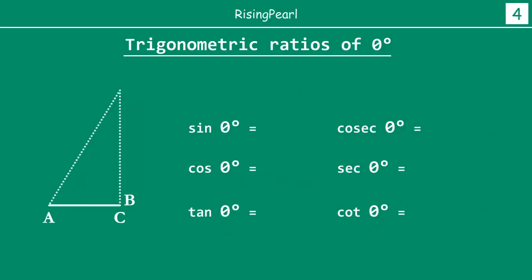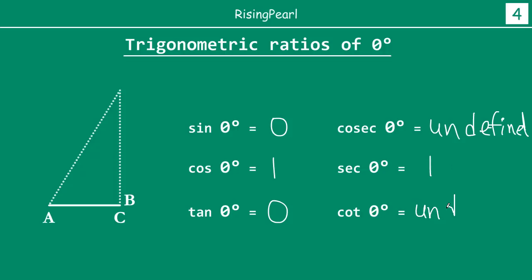To sum up, we have found all six trigonometric ratios for zero degrees. Sin zero is zero. Cos zero is one. Tan zero is zero. Cosec zero is undefined — it is one divided by zero. Sec zero degrees is one. And cot zero degrees is also undefined. In this episode, we learned all the six trigonometric ratios for zero degrees.